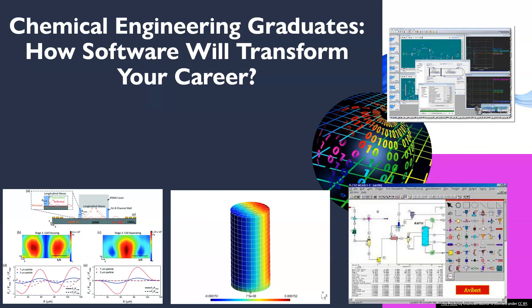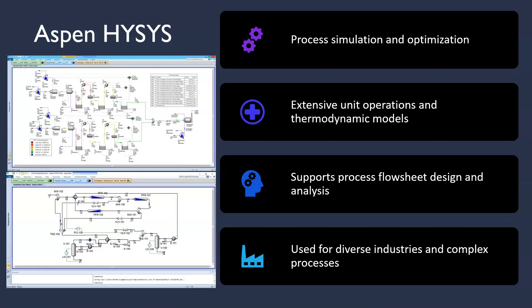Let's get started. The first software tool is Aspen Hysys. This widely used software offers extensive unit operations and is perfect for chemical process analysis. It can be used for complex process analysis. With its process simulation and optimization capabilities, Aspen Hysys enables engineers to model and optimize chemical processes, improving efficiency and reducing cost.